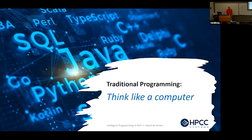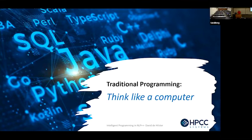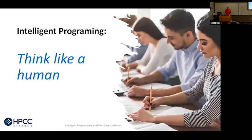This took me about a month and a half thinking about. What's the difference between traditional programming and intelligent computer programs? Traditional programming: you have all these languages — C++, TypeScript, SQL, Java, Python — and you think like a computer. Intelligent programming is thinking like a human. In fact, when you get to NLP++, which I claim is the first programming language for intelligent programming, the biggest problem I see my interns have is they think about the language and not how people do it.